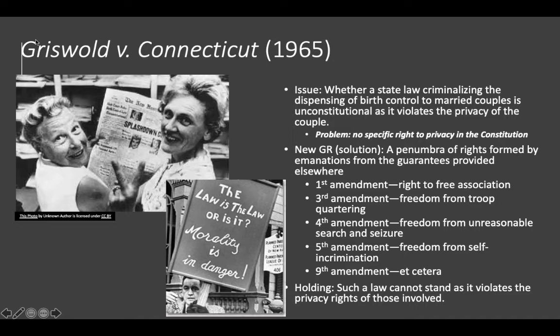Their plan was actually to use the clinic to challenge this law, and they got what they wanted. The issue here is whether a state law that criminalizes the dispensing of birth control to married couples is unconstitutional as it violates the privacy of the couple. The idea of the law was that the state wanted to protect conception and promote childbearing, because states have an interest in having more citizens for a variety of reasons. The problem for Griswold is that there is no specific right to privacy in the Constitution.